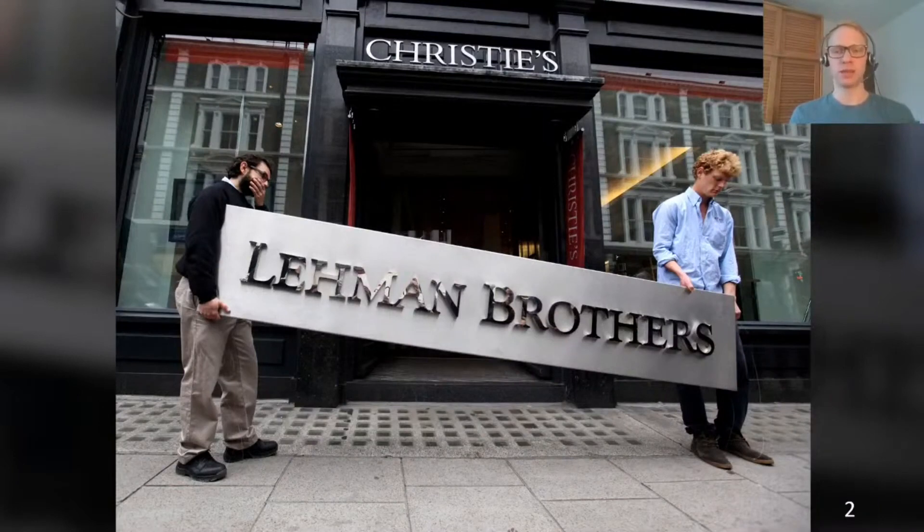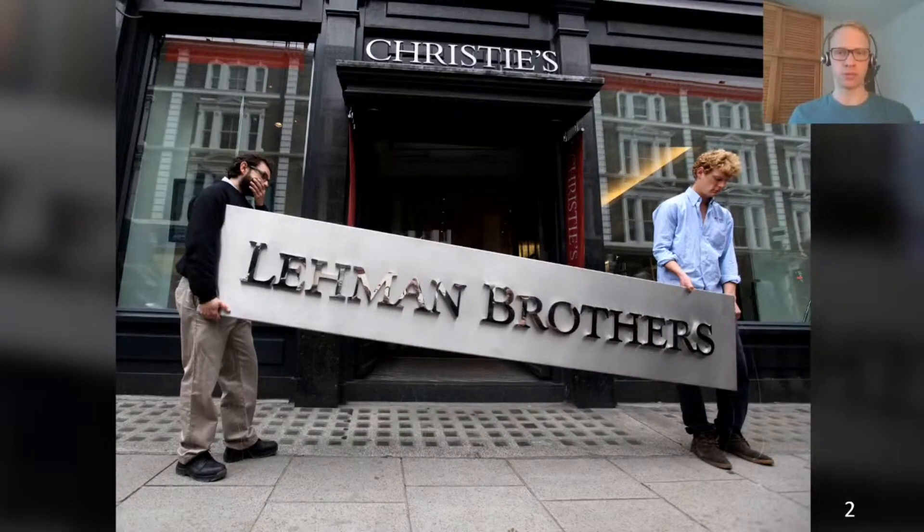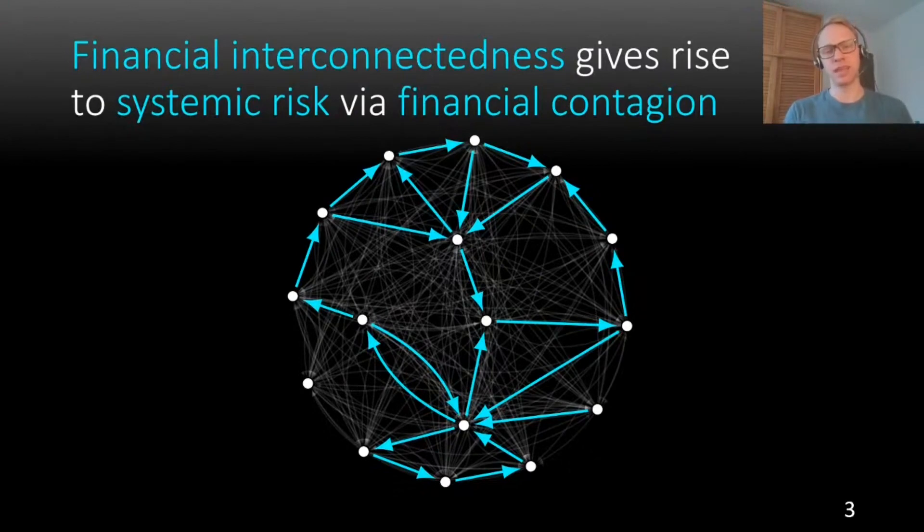The financial crisis of 2008 led to the downfall of major financial institutions and triggered a worldwide recession. One important learning from the crisis was that we should understand the financial system as a network of institutions connected by obligations to pay. Financial distress at one institution can spread through the network and affect many others. This way, financial interconnectedness gives rise to systemic risk or the risk of a financial crisis. The antidote to this problem seems to be to reduce interconnectedness in the system, and one way this is achieved is by eliminating cycles in the network through a process called portfolio compression.